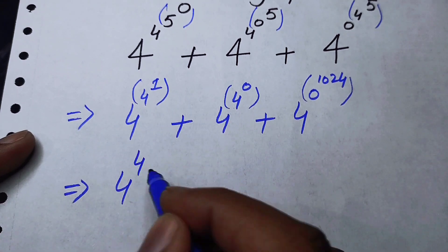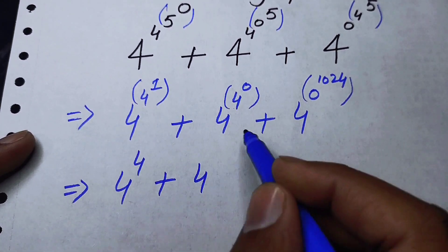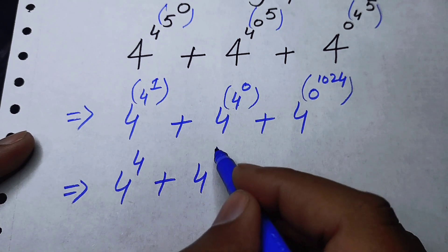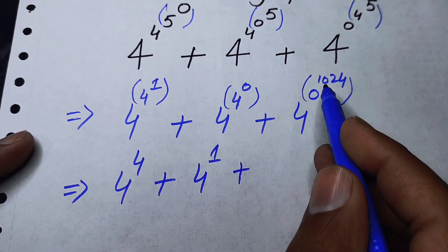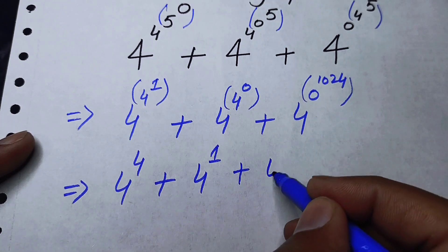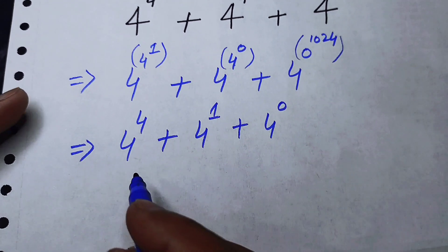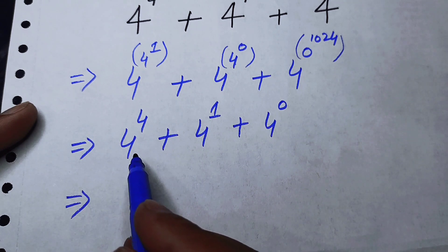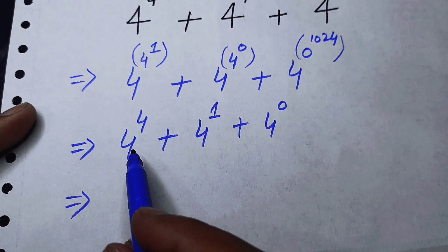So: 4 to the power of 1 becomes 4, plus 4 to the power of 0 becomes 1, plus 0 to the power of 1024 becomes 0. Then we focus on these terms.